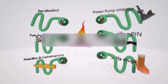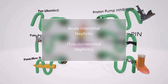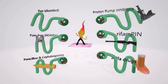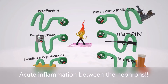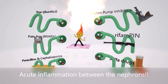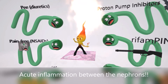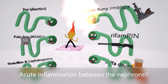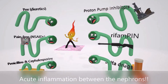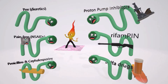In this scene we're going to talk about acute interstitial nephritis, also called tubular interstitial nephritis. Acute interstitial nephritis is when there's acute interstitial renal inflammation — represented by this fire guy between the nephrons, because there's inflammation in the connective tissue between the nephrons.